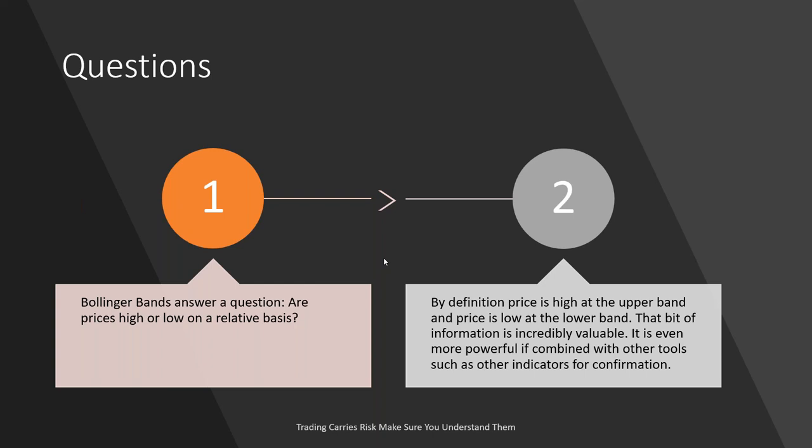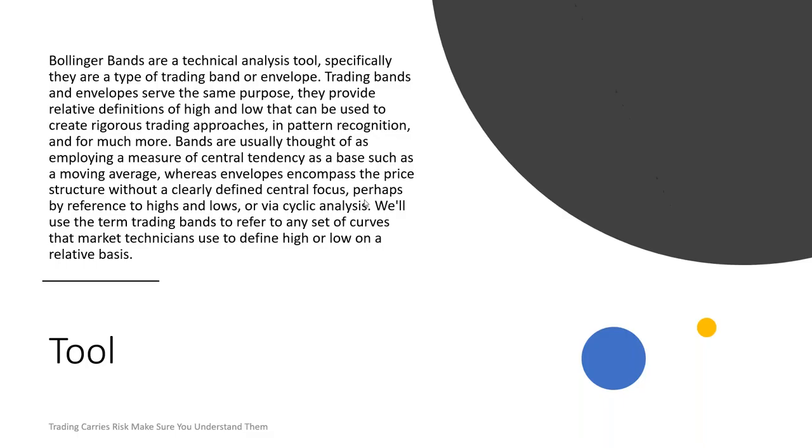By definition, price is high at the upper band of the Bollinger Bands, and price is low at the lower band. This is an incredible bit of information, and it's even more powerful when combined with other tools such as other indicators for confirmation. Let's go over and take a look at what Bollinger Bands looks like on the chart.